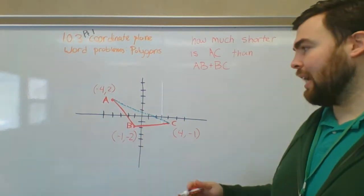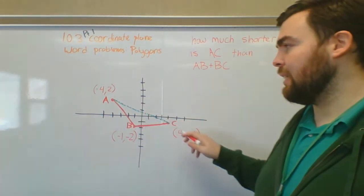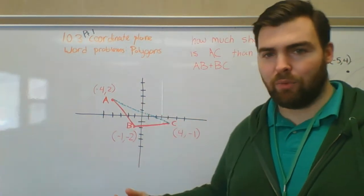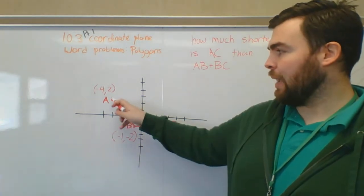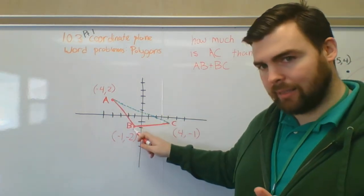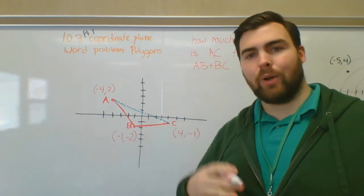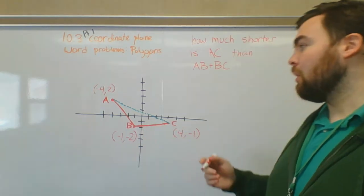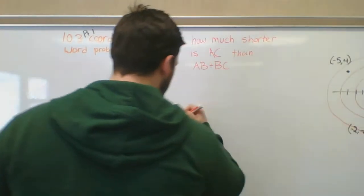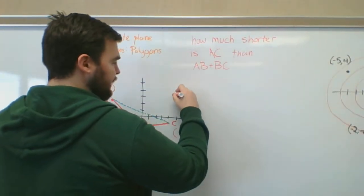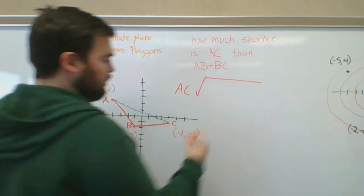I want to find what AC is — I'll do that with the distance formula. Then I'll compare it to the distance from A to B plus B to C, and subtract. So let's find AC first.